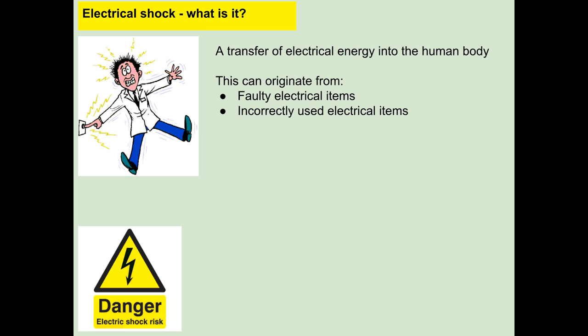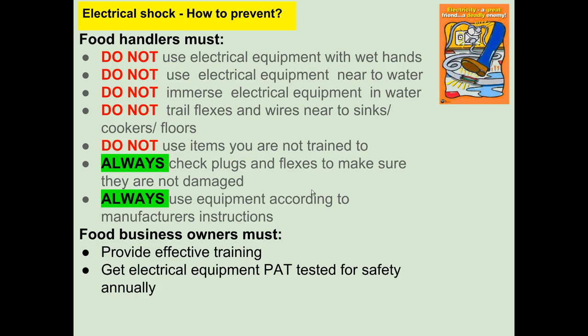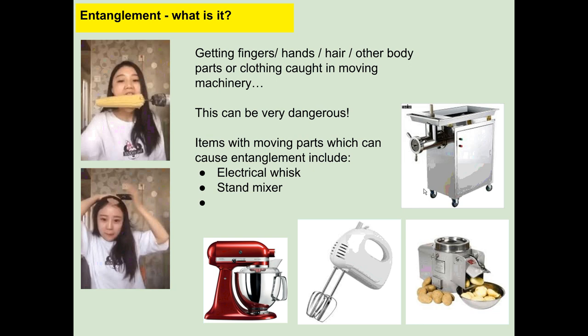Electrical shocks involve a transfer of electrical energy to the human body. Faulty or incorrectly used electrical items in the kitchen can cause them. Food handlers must follow these rules: don't use electrical equipment with wet hands; don't use it near water; don't submerge items in water; make sure flexes and wires are not trailing near sinks, cookers or floors; don't use any equipment you're not fully trained to use; check plugs and flexes before use to ensure they're not damaged; and always use equipment according to manufacturer's instructions. Business owners must provide effective training and ensure all electrical equipment is PAT tested annually.